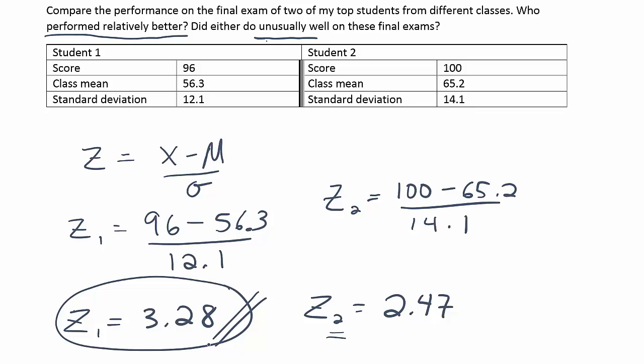Again, student one did a little more well on the test because his score is above three standard deviations. At that point, he's clearly distinguished himself as an unusual performer on the test. Student two, though, again, above two standard deviations. So we'll say she also did unusually well.